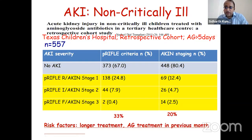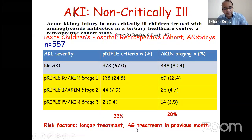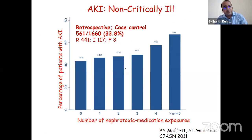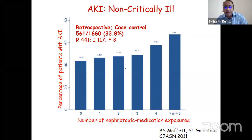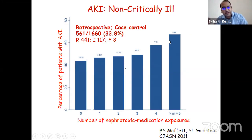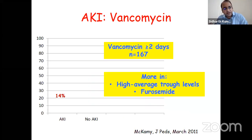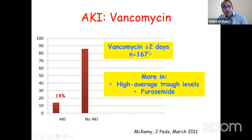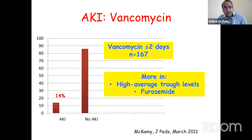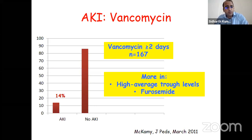A study from Dr. Goldstein in Cincinnati showed a stepwise increase in AKI incidence as the number of nephrotoxins increased. AKI is also common post-vancomycin—a Canadian study showed that children receiving vancomycin for more than two days had AKI incidence as high as 14%. Children with higher trough levels of vancomycin, or those on concomitant furosemide, are more likely to have AKI.